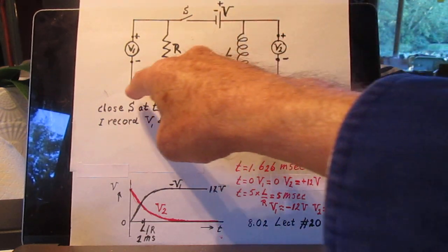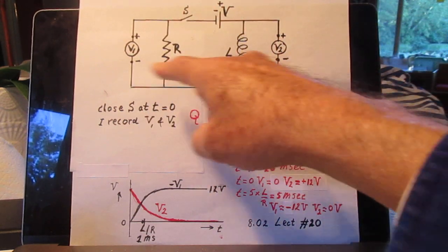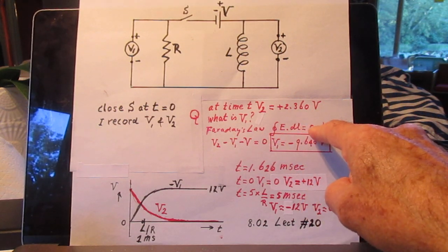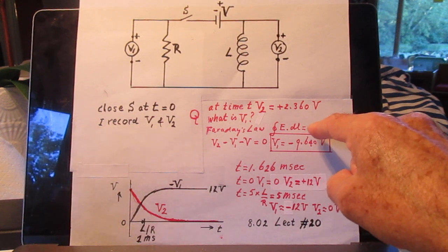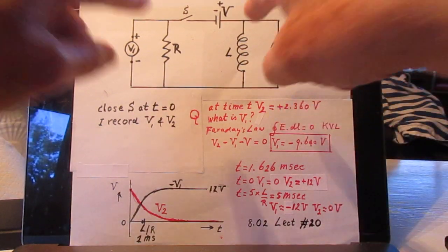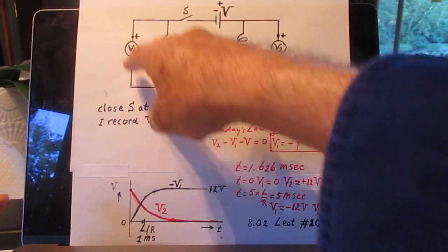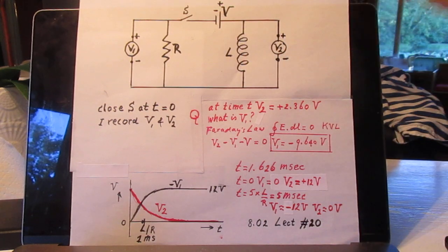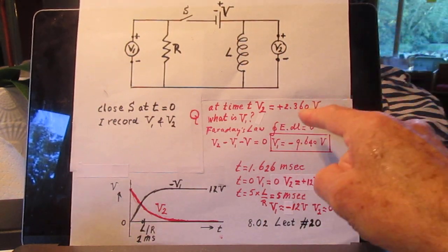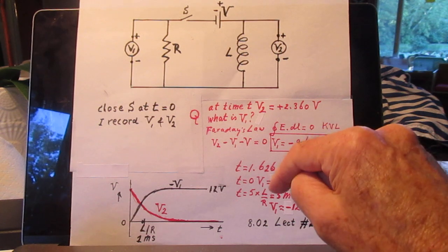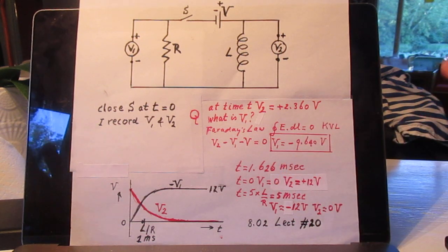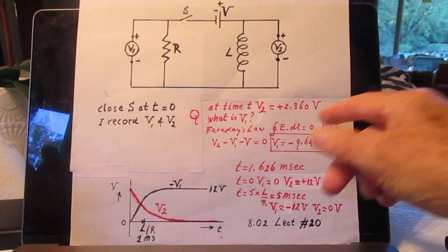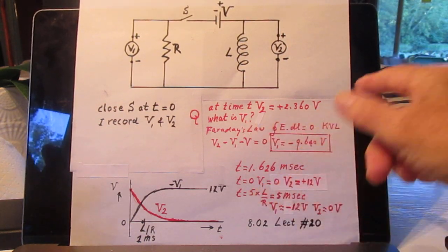Now, I go around this closed loop and I calculate the integral, the closed loop integral of E dot DL. Since there is no changing magnetic field in this direction through this loop, there is no self-inductor in this loop. Faraday's law says that the closed loop integral of E dot DL is 0. Some people call that Kirchhoff loop rule. Well, Kirchhoff loop rule is only a special case of Faraday's law. Faraday's law always holds.